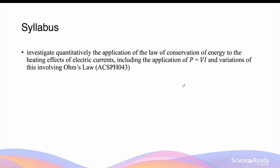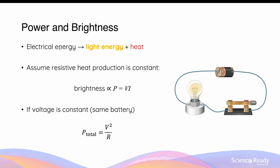Hey everyone, this video is on light bulbs in series and parallel circuits. By way of review, electrical energy in circuits, when utilized by a light bulb or lamp, is transformed into a combination of light energy as well as heat. If we assume the amount of heat transformed from electrical energy due to resistive heat production is constant, then the brightness, which is an indication of the amount of light energy the light bulb produces, will be proportional to its electric power dissipated by the light bulb.